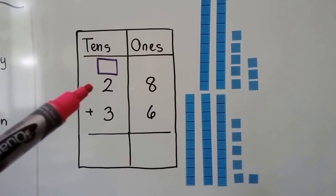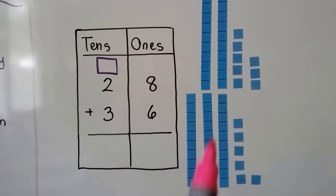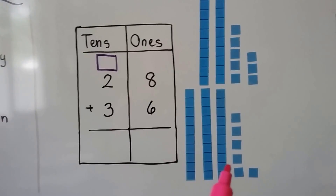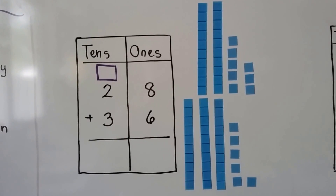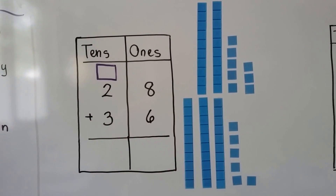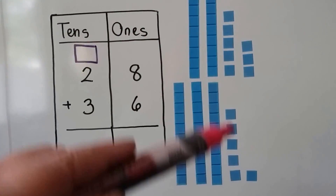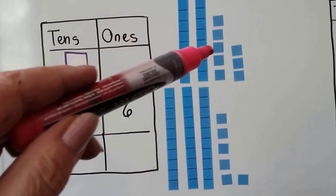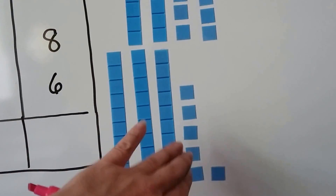Here we have a two-digit math problem. We're going to add 28 plus 36. We use our models — we have two tens and eight ones for the 28, and three tens and six ones for the 36. These models can help us regroup and add 28 plus 36. First we look at the ones to see if we have enough to make a new ten. I see one, two, three, four, five here and one, two, three, four, five here.